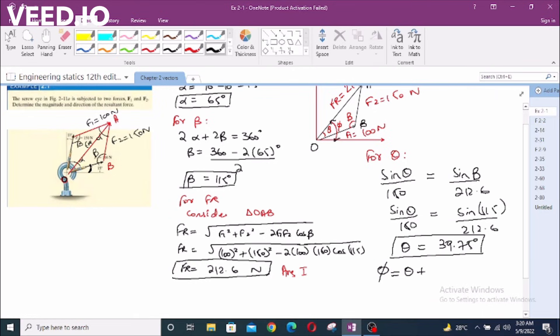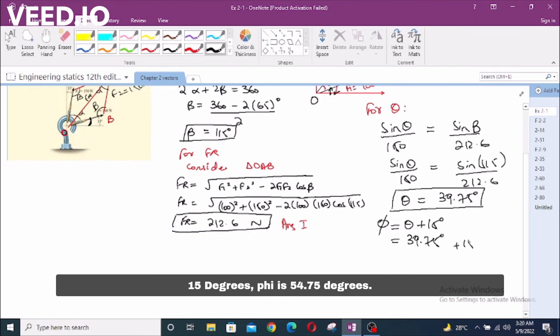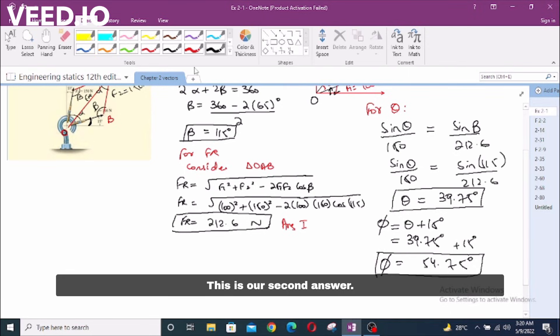We have 39.75 degrees plus 15 degrees. We have 54.75 degrees. This is our second answer.